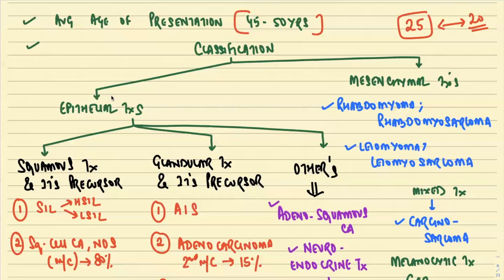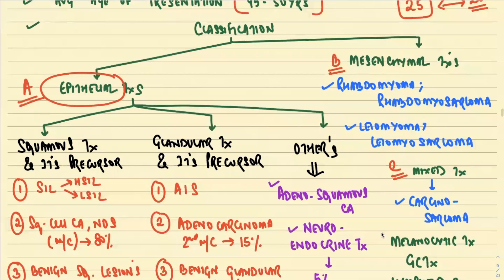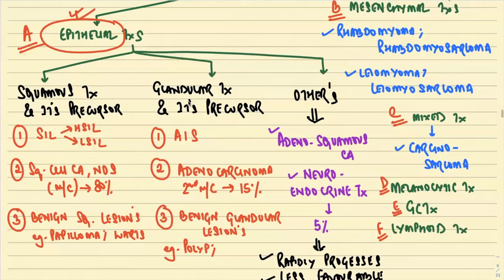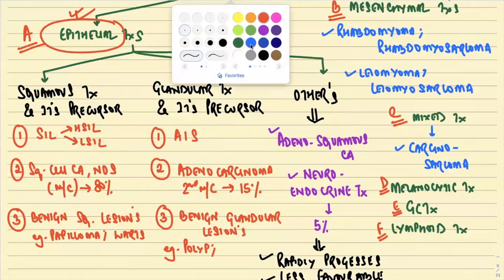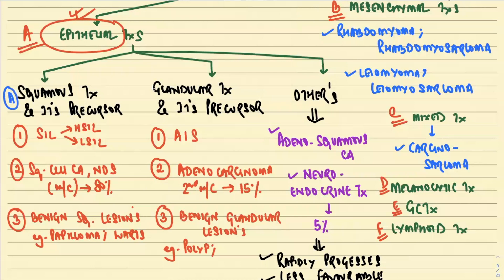There is a classification of cervical carcinoma. We are going to study the epithelial tumors today. The first heading is epithelial tumors of the cervix, the second is mesenchymal tumors, then we have mixed tumors with both epithelial and mesenchymal components, melanocytic tumors, germ cell tumors, and lymphoid tumors. Among the epithelial tumors, there are three important headings: squamous tumors and their precursors, glandular tumors and their precursors, and other tumors.